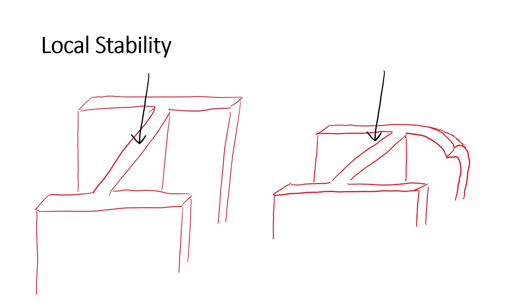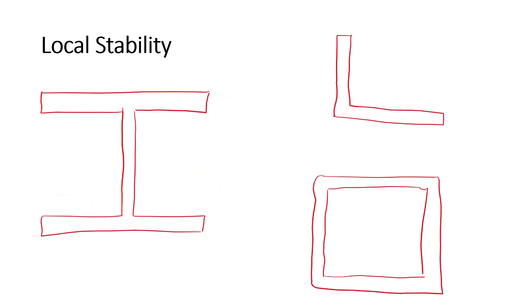If the flanges of an I-beam are very thin relative to their length, then the flange will buckle locally, before the column buckles globally due to flexural buckling. The same happens to the webs, if they are very thin relative to their length. In order to quantify the slenderness of certain elements in a section, we categorize them into stiffened and unstiffened elements.